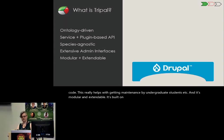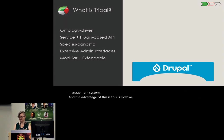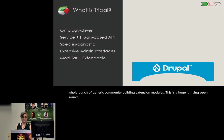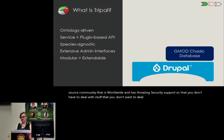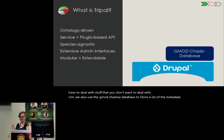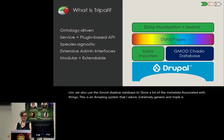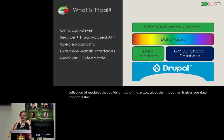It's built on a platform called Drupal, which is a generic content management system. The advantage of this is that's how we get translation support. It also provides a whole bunch of generic community-building extension modules. This is a huge, thriving open source community that is worldwide and has amazing security support. We also use the Gmod Chado database to store a lot of the metadata. TRIPLE is really a collection of modules that builds on top of those two and glues them together, giving you data importers with beautiful web interfaces with help text, dropdowns, and autocompletes.